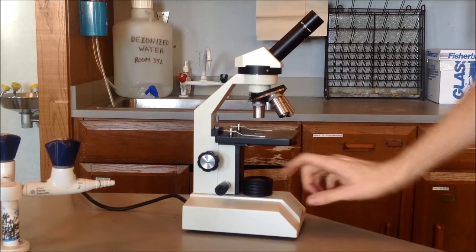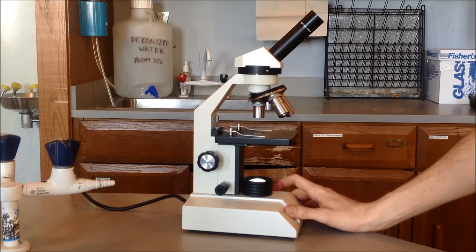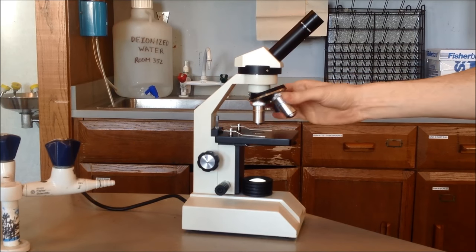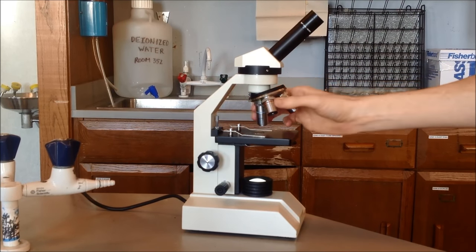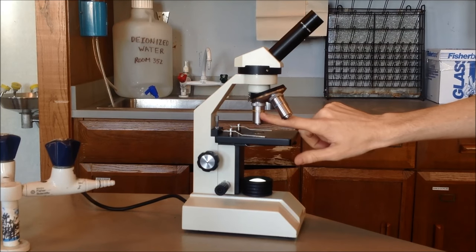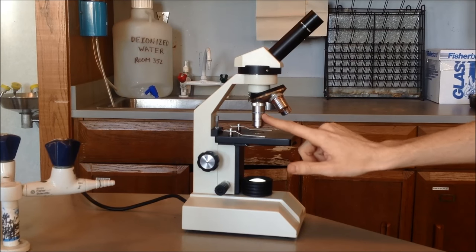The lamp is right here. There's a switch on one part of the base. It turns the lamp on, like so. The nose piece is this thing right here, which holds all three objective lenses. The red one, the scanning. The yellow one, the low power. And the blue one, or the high power.